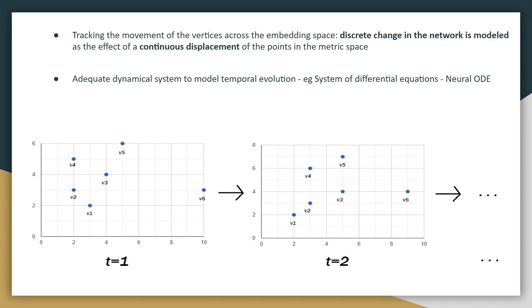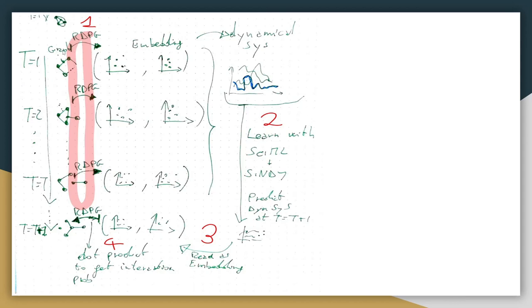Now as we have these embedding spaces, we're tracking the movement of the vertices across them. So a discrete change in the network is modeled as an effect of the continuous displacement of the points in the metric space. And so we can do this having a dynamical system, model this with a system of differential equations. Now we don't actually know what the functions themselves are, and for that reason we use neural networks to try and find what those functions might be.